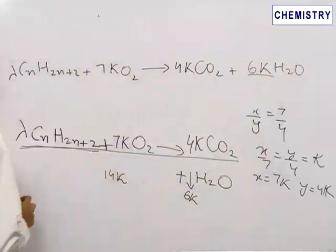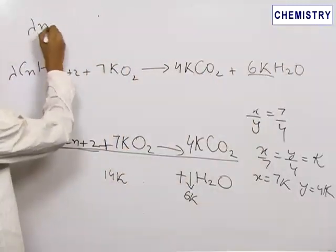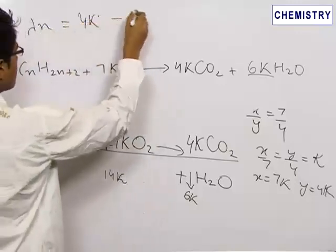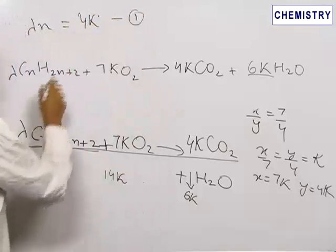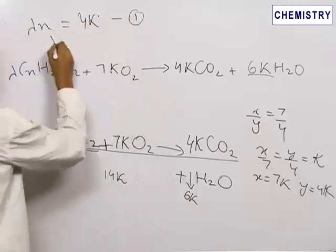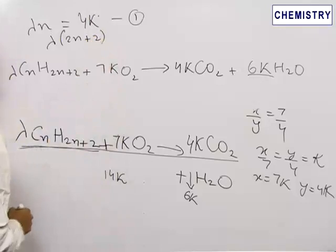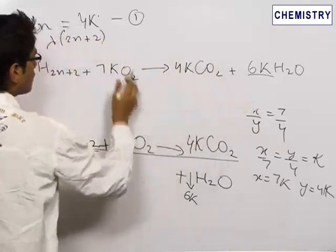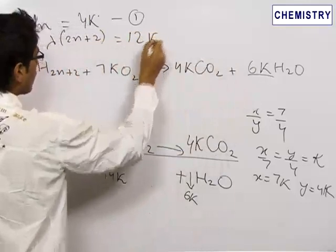Now balancing the number of carbon we get lambda into n is equal to 4k. This is the first equation and balancing the hydrogen we get lambda into 2n plus 2 is equal to 6k into 2 which is equal to 12k.